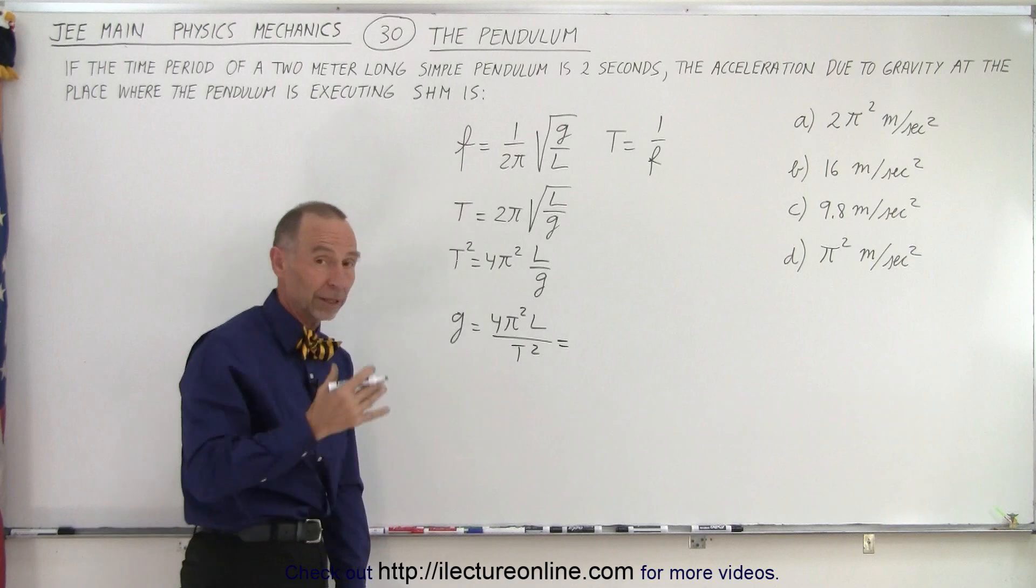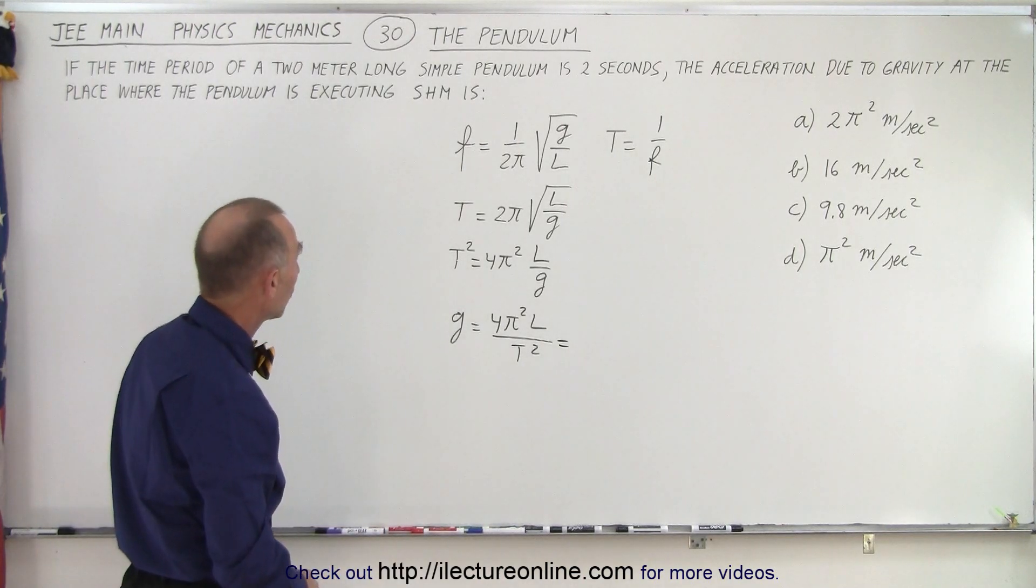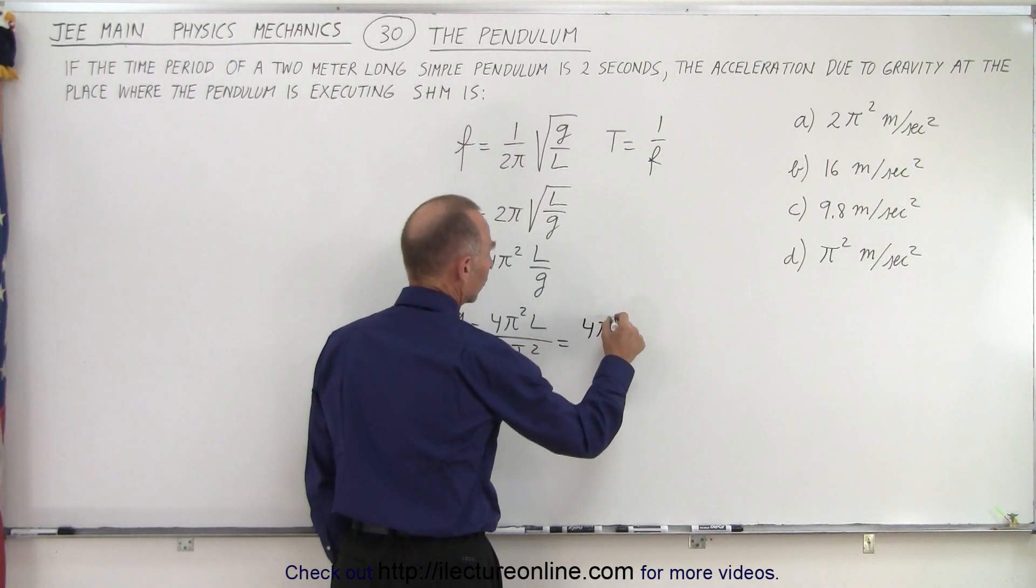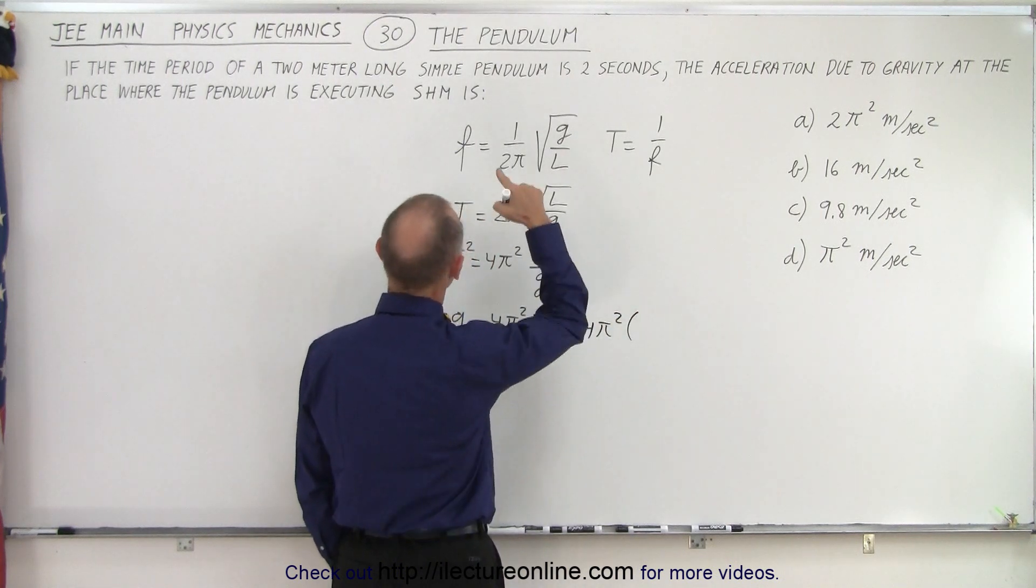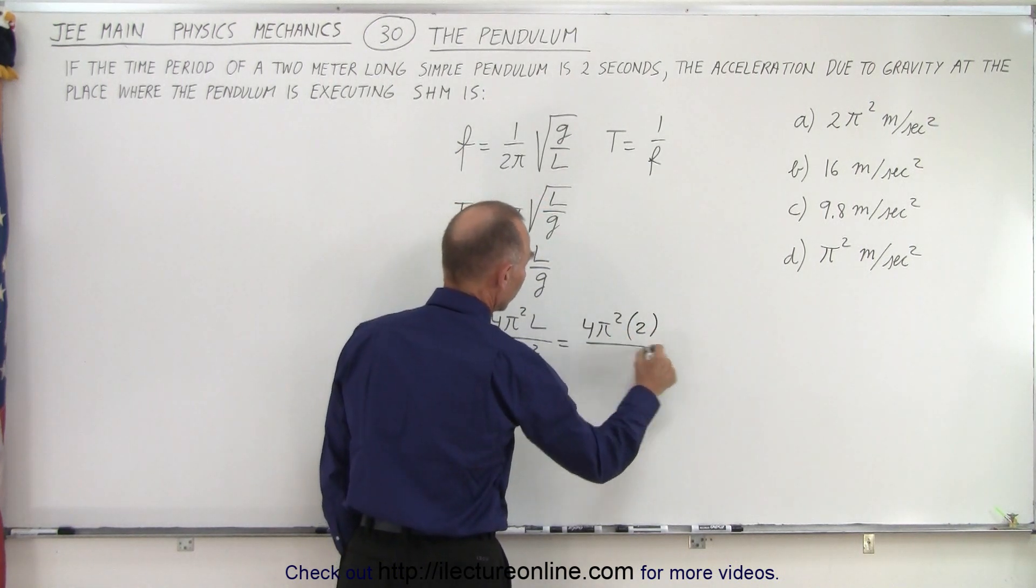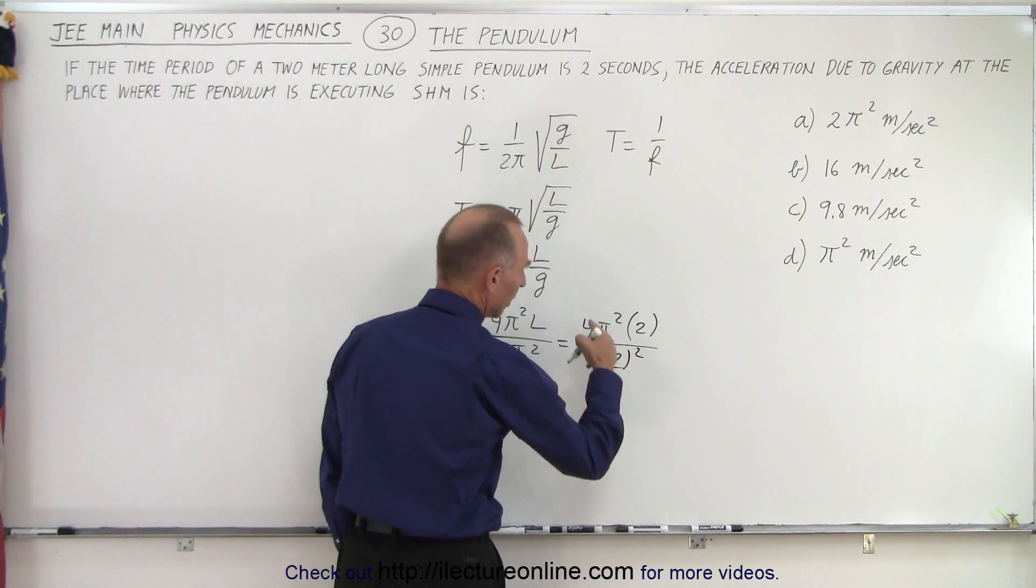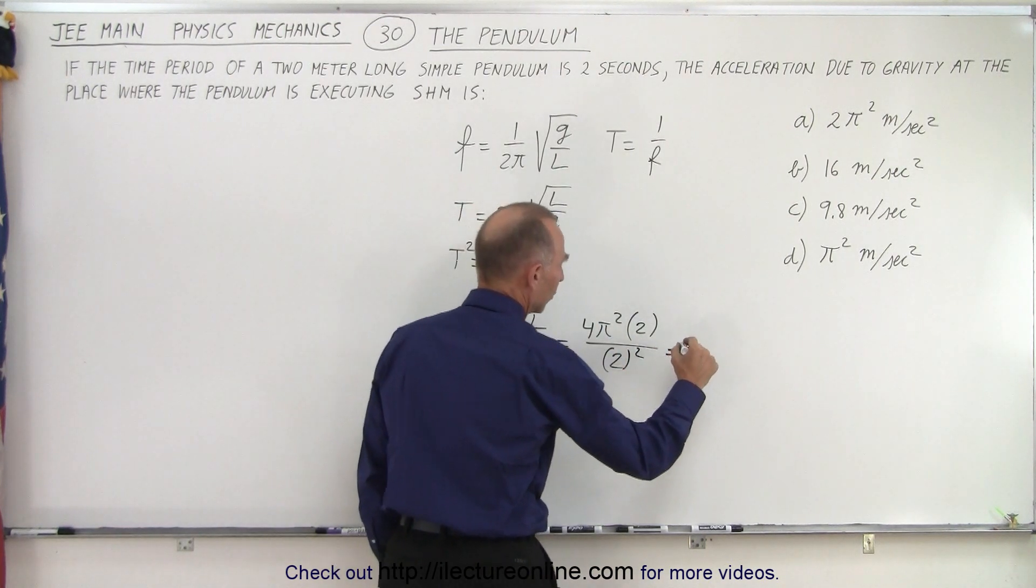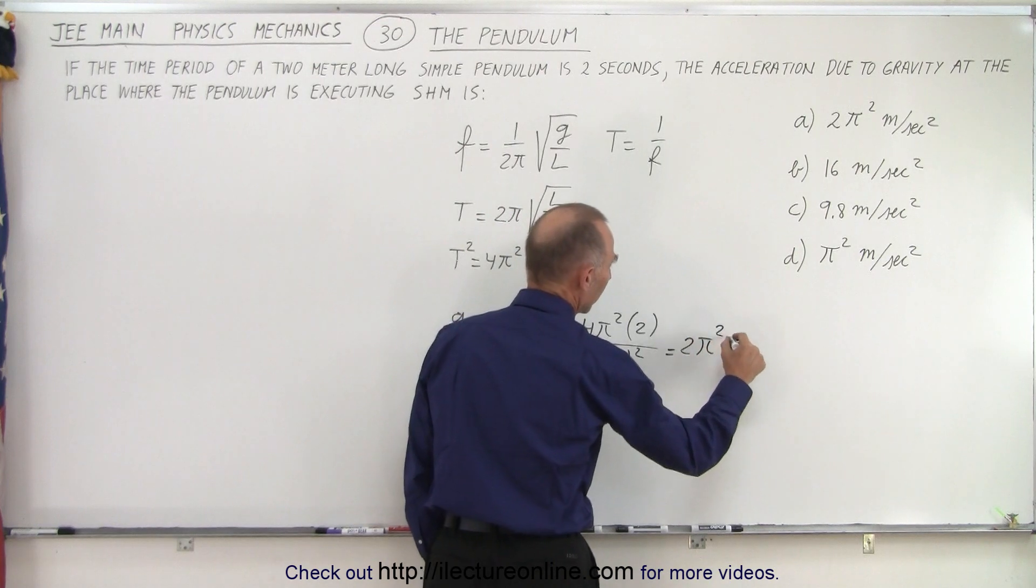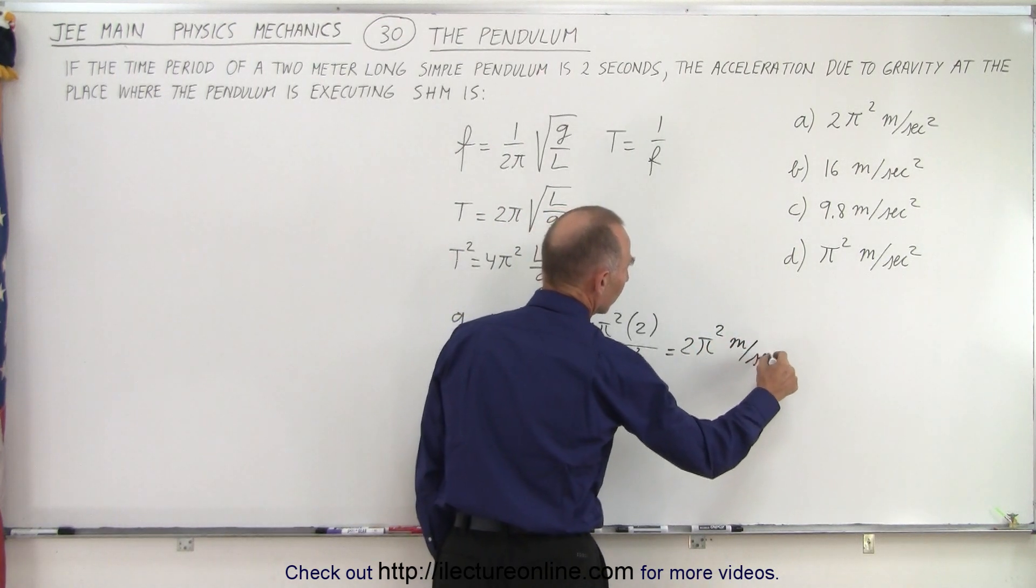And now all we have to do is plug in some numbers. So we have 4π² times l. l is 2 meters, so we plug in 2, divided by T, the period, which is 2 seconds, so we have 2 squared. That cancels out. So we end up with 2π² meters per second squared.